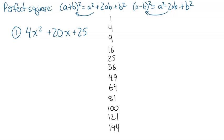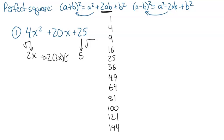I can take the square root of 4x squared — that's 2x. I'm going to take the square root of that first one; can I take the square root of this last one? The square root of 25 is 5. Then I want to check the middle term and see if it equals 2 times the square root of the first term times the square root of the last term. I'm going to go 2 times 2x times 5 — just taking these two numbers and multiplying them times 2 — and I get 20x. So that means it's a perfect square.